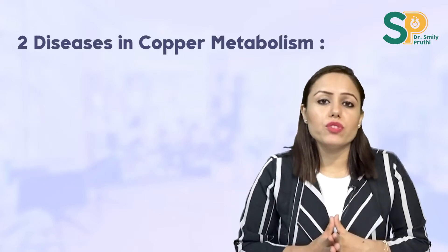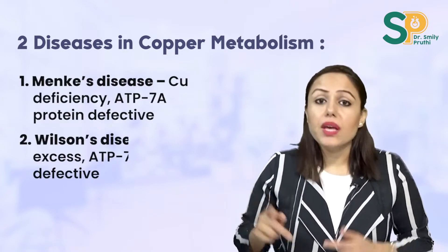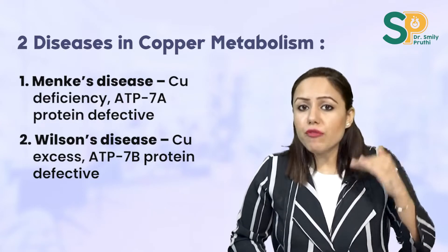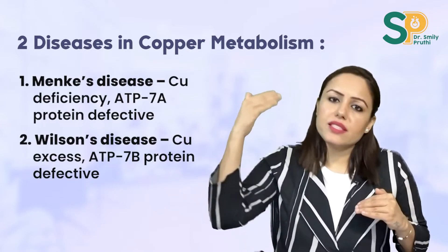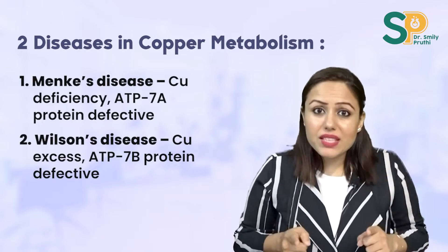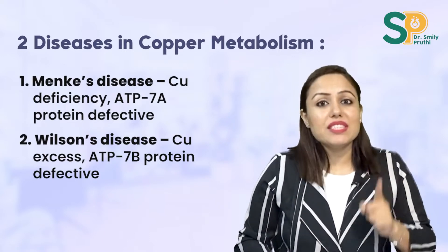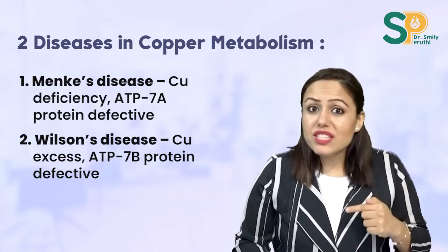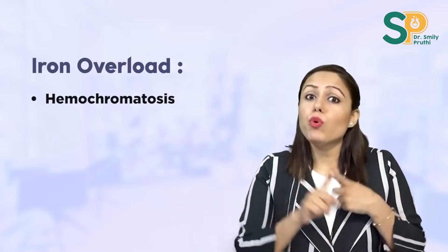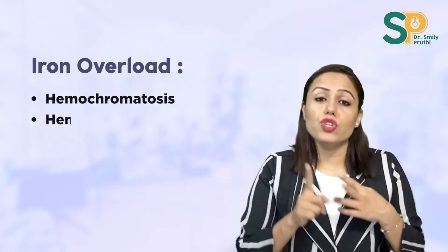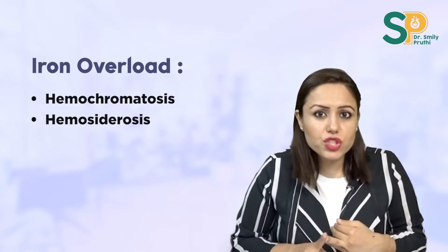There are two diseases in copper metabolism: Menke's disease and Wilson's disease. Menke's disease is deficiency of copper; Wilson's disease is excess of copper. In Menke's disease the defective protein is ATP7A; in Wilson's it is ATP7B. You must also read hemochromatosis and hemosiderosis — these are conditions of iron toxicity. Hemochromatosis is also known as bronze diabetes.